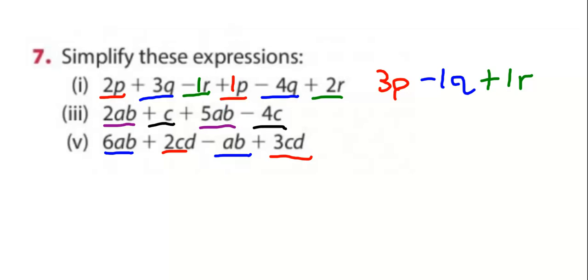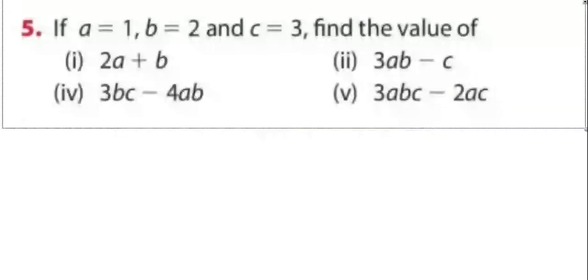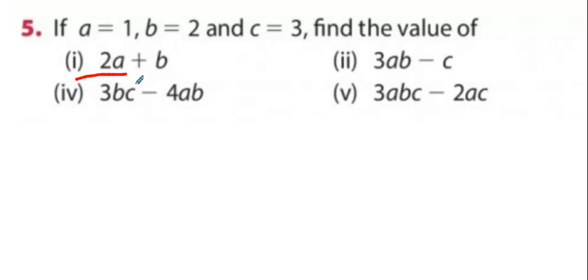What's two AB plus five AB? Seven AB. And what's C take away four C? Minus three C. And then finally, six AB minus AB, five AB for the blue part. And two CD plus three CD? Five CD.